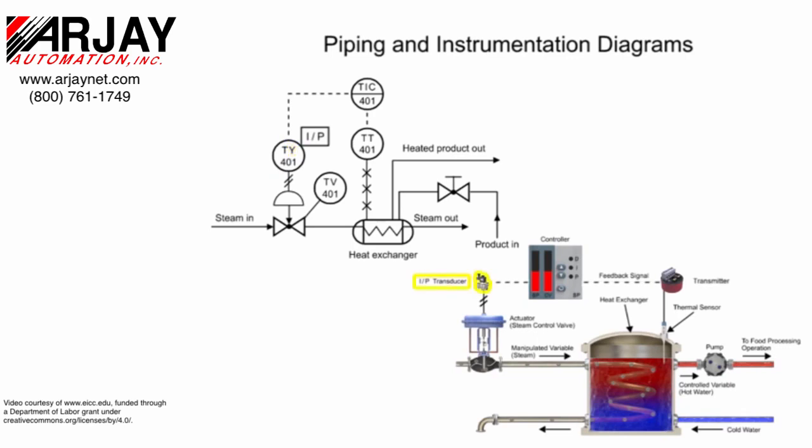The transducer converts an electronic signal to a pressure signal and is indicated by the square containing the letters I and P. The line with diagonal marks designates a pneumatic connection.